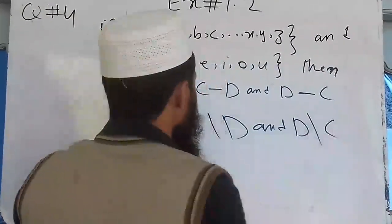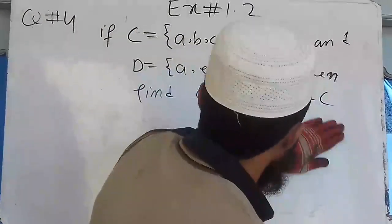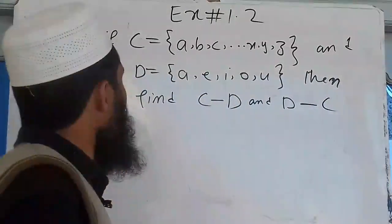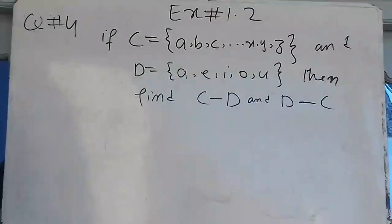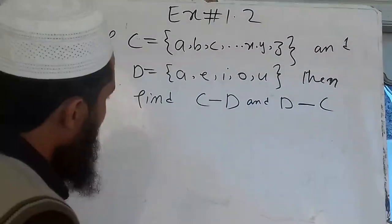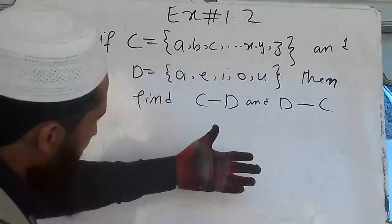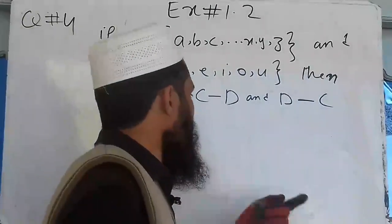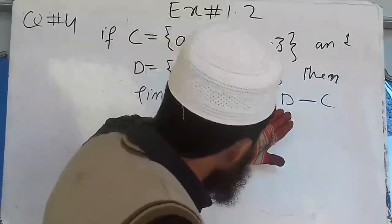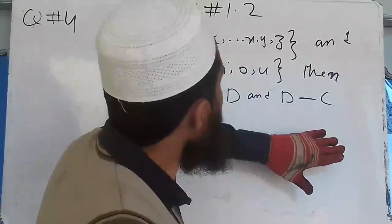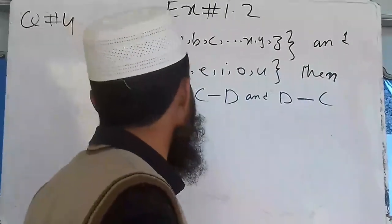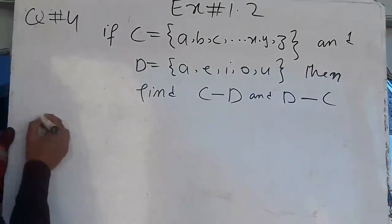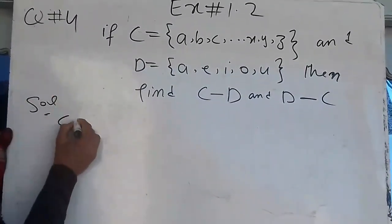We are going to look at the representation of the difference. We are going to say D difference C and C difference D. We will say D difference D is {A, B, C, ... up to Z}.